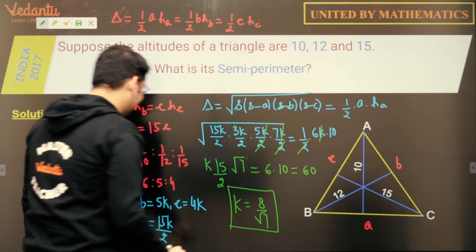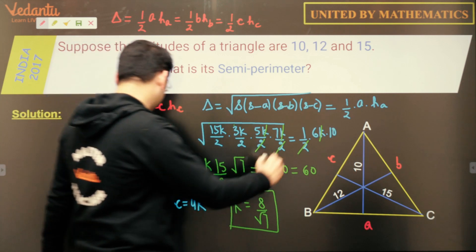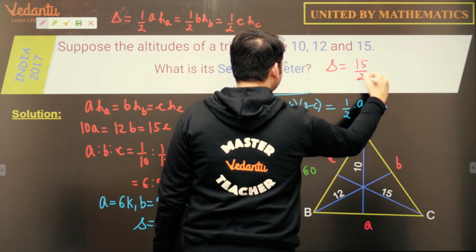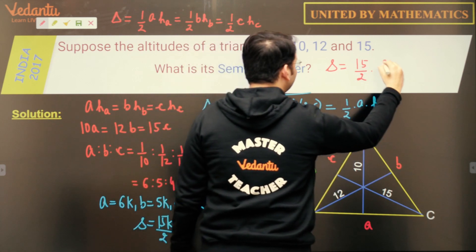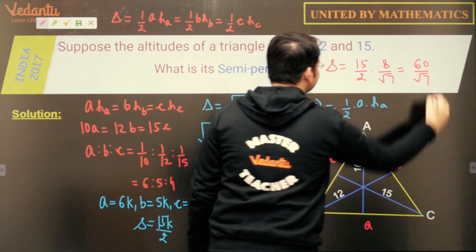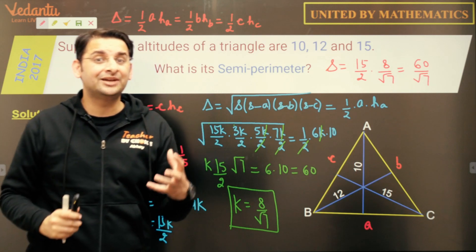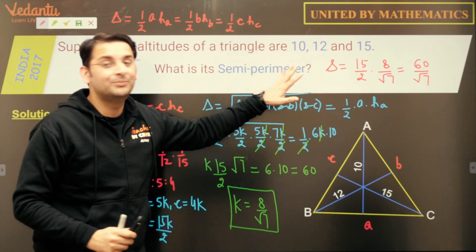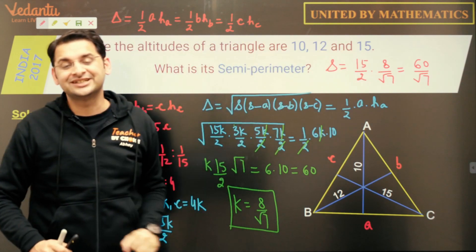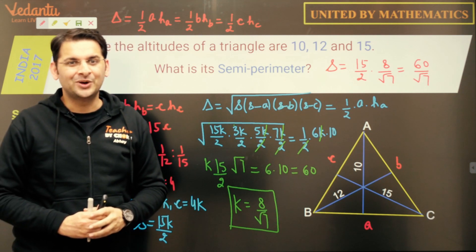And if K is 8 by root 7, we were asked to find the semi-perimeter which was 15K by 2. If I substitute the value, it will be 15 upon 2 into K and K is 8 upon root 7. So it will be 60 upon root 7 which is the answer to this question. Though it was asked in pre-RMO which gives only two-digit answers, this was a bonus question because the answer is not a two-digit number. So it is 60 upon root 7. I hope you have enjoyed the solution of this question. God bless.